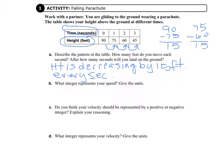The second question is: after how many seconds will we land on the ground? It took three seconds to get to 45 feet. Since 45 divided by 15 equals 3, it will take another three seconds to hit the ground. Three plus three equals six, so it will take a total of six seconds to reach the ground.